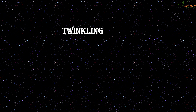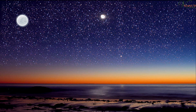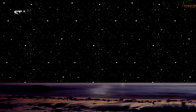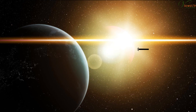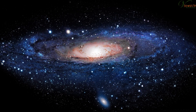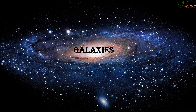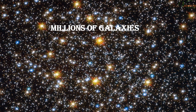The night sky is full of innumerable twinkling bodies called stars. They are very big and hot celestial bodies made up of gases and emit large amounts of heat and light. Stars closer to Earth appear brighter. The Sun is the star closest to Earth. Clusters of billions of stars along with dust and gas are bound together by gravity — such clusters are called galaxies. Millions of galaxies together make up our universe.